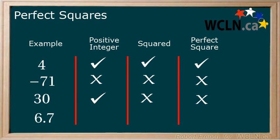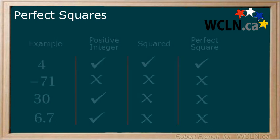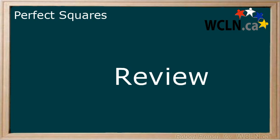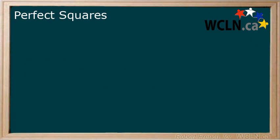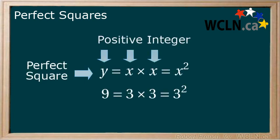6.7 — while 6.7 is positive, it is not an integer. There is not a positive integer that can be squared to get 6.7. Therefore, 6.7 is not a perfect square. In this lesson, you learned about perfect squares. You learned that a perfect square is an integer that can be expressed as the product of two equal positive integers. This can also be represented using an exponent of two.